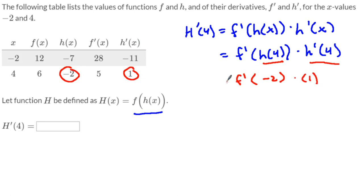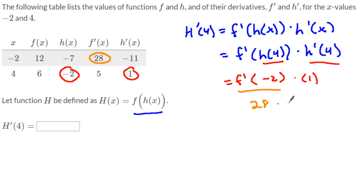But remember, I still have this f prime right here. I haven't lost it, which means I have this last function to take a look at. I have f prime of negative 2. So I'm going to go to my table — f prime of negative 2 is equal to 28. I still have times 1 right here. So what's 28 times 1? It's 28. And so that's the answer — h prime of 4 equals 28.